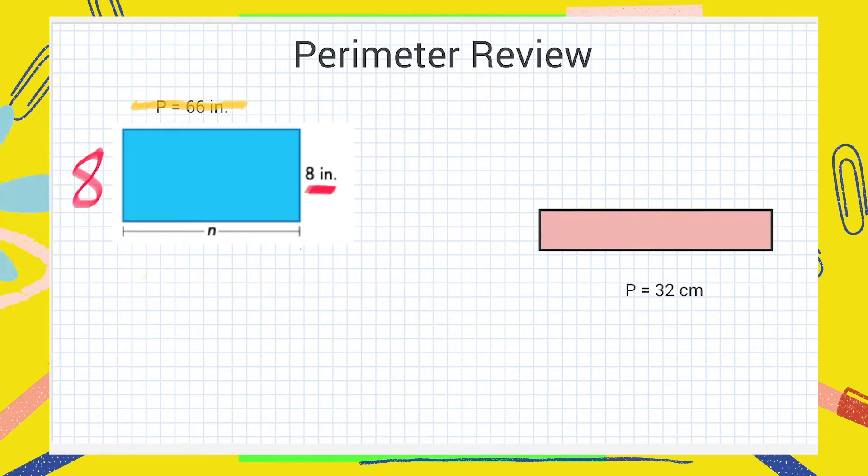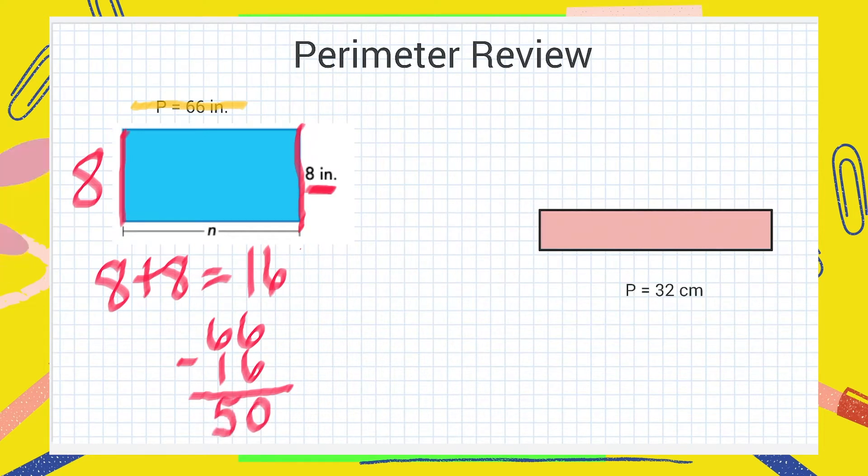So together 8 plus 8 equals 16. I know that of the 66 inches these two sides make up 16 of those. Take a minute to think what I should do next. If you are thinking subtraction, that is right. So I am going to take my 66 total inches and I am going to subtract what I already know, 16 inches. 6 minus 6 is 0 and 6 minus 1 is 5. That means I have 50 more inches. The sum of these two sides is going to equal 50 inches.